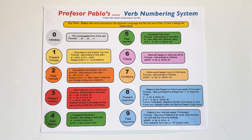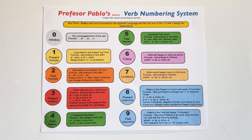In our prior lesson, you all saw my original graphic that I created to show you the Spanish verb universe. Contrary to popular belief, there are not millions of verb conjugations and verb tenses and such. There are only 10 things that you can do to a verb. This chart shows the verb numbering system that I created, going from 0 to 9 — from the most basic, the infinitive, the unconjugated form, all the way up to 9, the most complex form, the past subjunctive.